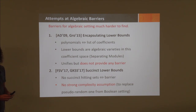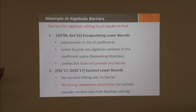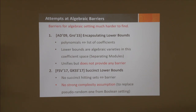What it means to say lower bounds are algebraic varieties: any lower bound proceeds by finding a polynomial and its zero set, and saying all 'easy' polynomials, viewed as vectors of coefficients, are contained in that zero set. Your hard polynomial is something you prove is not in this variety. So the coefficients of easy polynomials satisfy a system of polynomial equations, and you just need to find something outside.